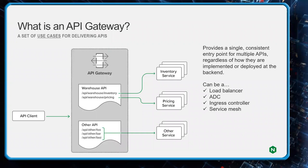An API gateway typically includes additional functionality around the reverse proxy and load balancer — things like authorization control, authentication, access control, and single sign-on solutions. It could involve JWT tokens or similar strategies. The API gateway will typically sit in a position similar to where you'd see an ADC — an application delivery controller. One of the things the API gateway should be able to do is facade routing. Looking at the overview: we have our warehouse API with different URI paths like /api/warehouse/inventory and /api/warehouse/pricing.